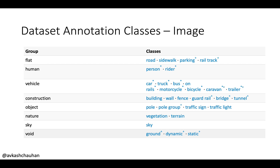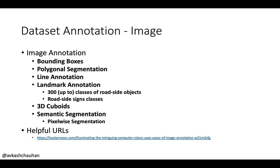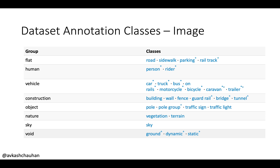Looking into dataset annotation within images, we have various groups. In the flat group we have things like road, sidewalk, parking, and rail track. In the humans group we have person, rider, baby in a stroller, guy in a wheelchair. Vehicles include cars, trucks, buses, etc. The construction category includes buildings, walls, fences, guardrails, bridges, and tunnels. There is also a whole separate class for signs, traffic lights, and poles.